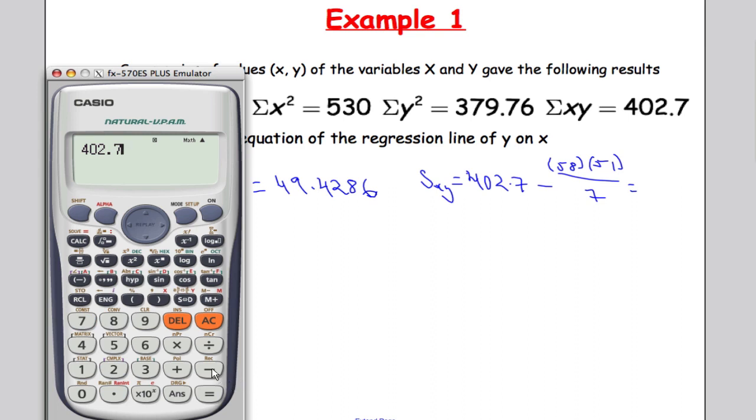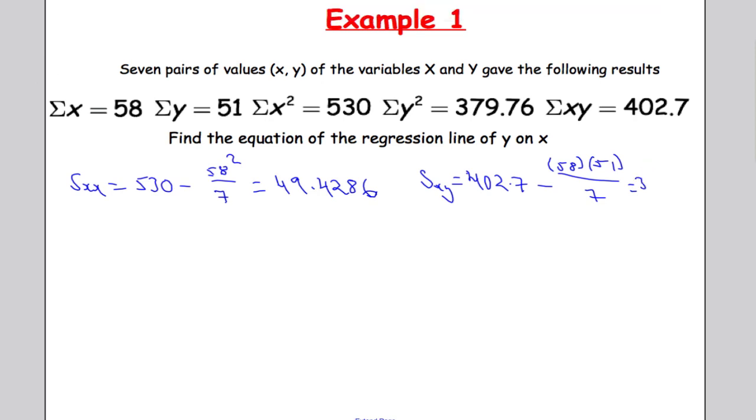402.7 minus 58 times 51 all over 7 equals 31.1286. So at the moment I'm rounding to four decimal places.